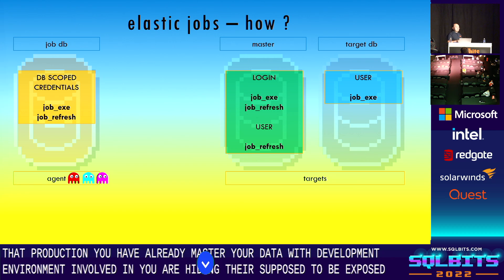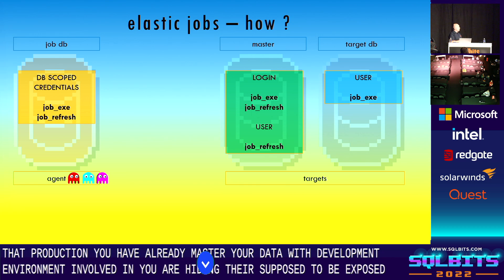Job refresh is responsible for refreshing the list of databases on the target. If your target is a whole instance, the refresh credential can see all databases — so if you remove or add a database, the agent will know. The job execution credential allows the agent to execute scripts against the databases. If your target is just a single database, there is no job refresh credential needed, because if you remove that database it's simply gone.